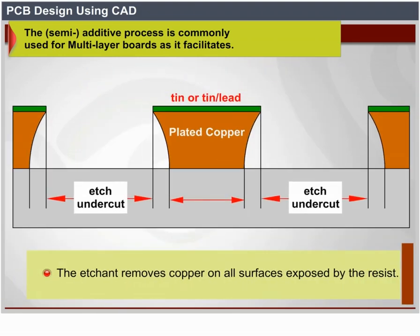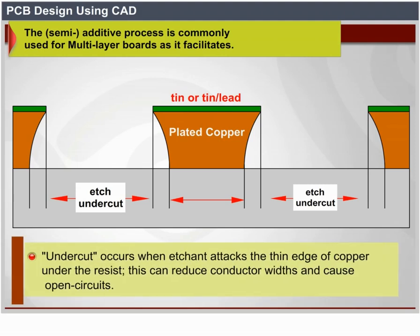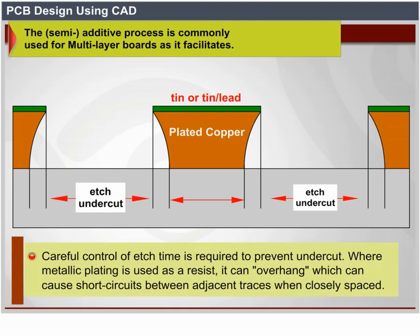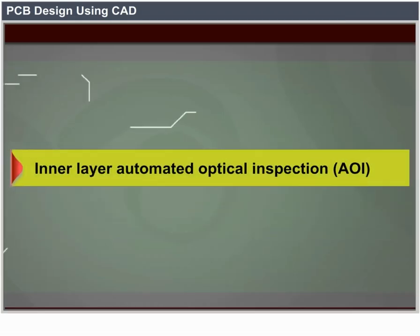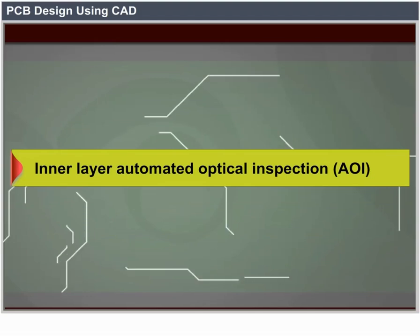The etchant removes copper on all surfaces exposed by the resist. Undercut occurs when etchant attacks the thin edge of copper under the resist, which can reduce conductor widths and cause open circuits; careful control of etch time is required to prevent undercut. Where metallic plating is used as a resist, it can overhang, which can cause short circuits between adjacent traces when closely spaced. Overhang can be removed by wire brushing the board after etching.